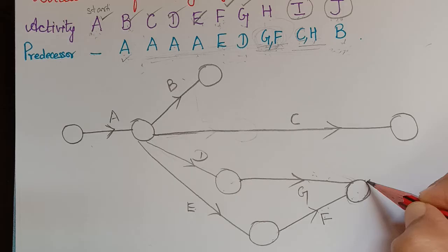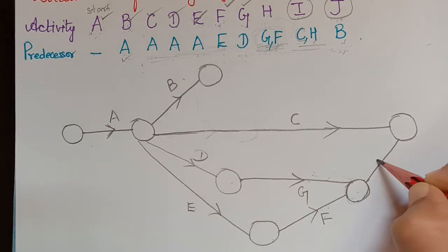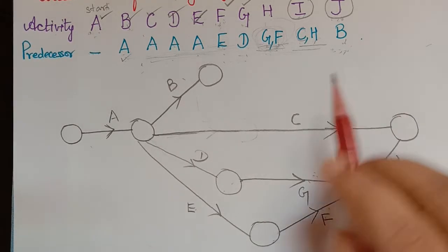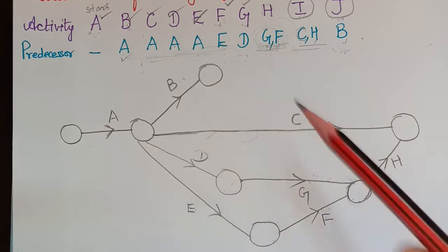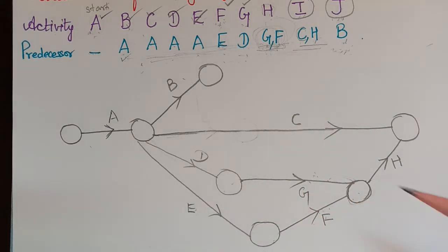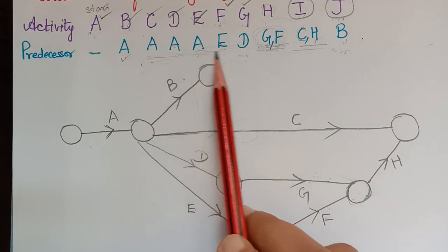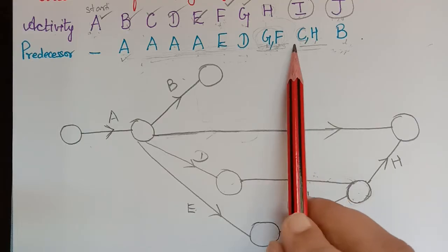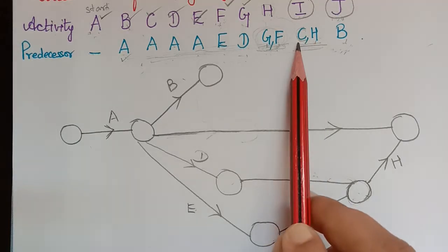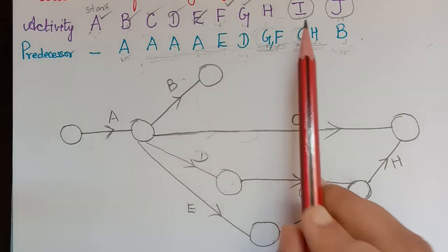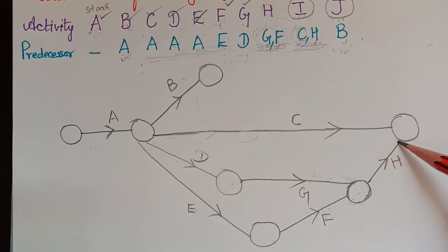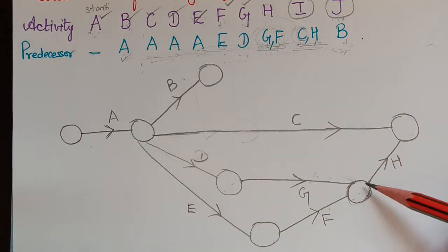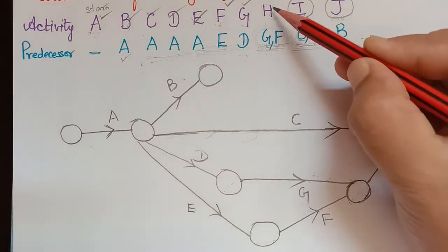Now it is easy to draw H. Activity H starts from the shared end node of G and F, and ends at the end node of activity C — because H appeared alongside C in the predecessor list. So H starts here and ends at the end node of C. Activity H is now completed.